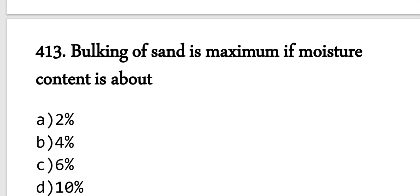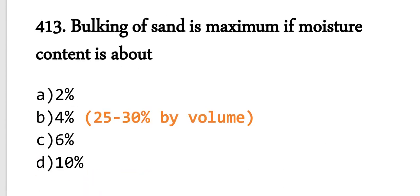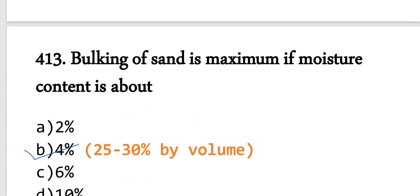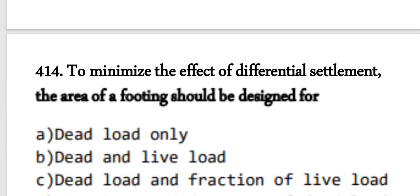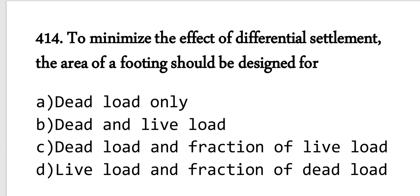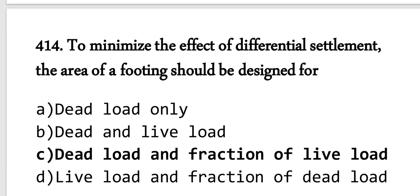Question 413: Bulking of sand is maximum at moisture content of 4 percent. At 4 percent moisture content, sand bulks by 25 to 30 percent by volume. Option B is correct. Question 414: To minimize the effect of differential settlement, the area of the footing should be designed considering dead load and a fraction of the live load. We completely consider dead load but only a fraction of live load to minimize differential settlement. Option C is correct.